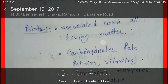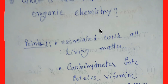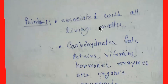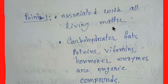What are the importance of organic chemistry? Organic chemistry is important because it is the chemistry associated with all living matter, in both plants and animals. Carbohydrates, fats, proteins, vitamins, hormones, enzymes, and many drugs are organic compounds. Wool, silk, rayon, perfumes, dyes, flavors, detergents, plastics, and gasoline also contain organic compounds.